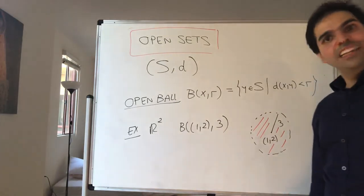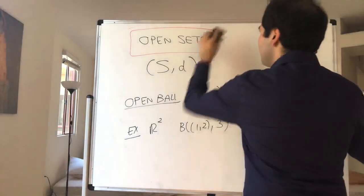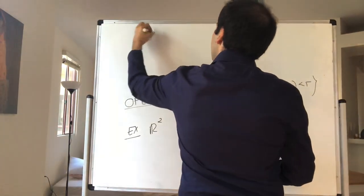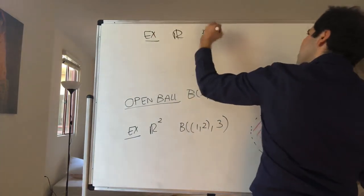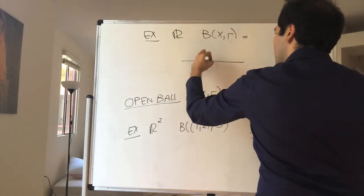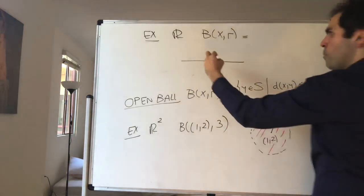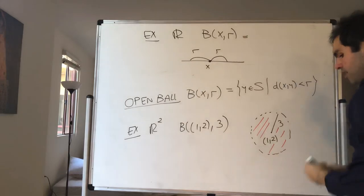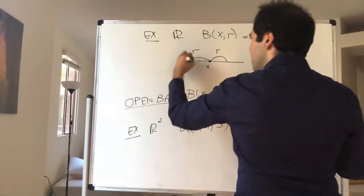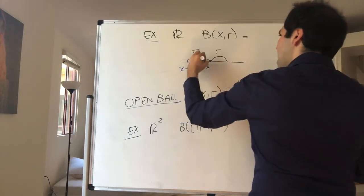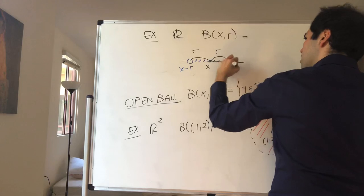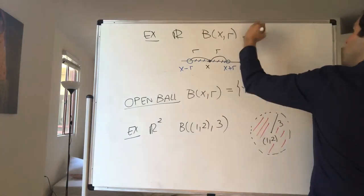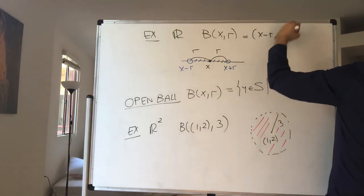More interestingly, let's see what it means to be a ball in R. Balls are very easy in R. What does it mean for a point to be at most r away from x? The open ball here turns out to be nothing other than the interval (x − r, x + r), because those are the points that are at most r away from x. So B(x, r) in this case is (x − r, x + r).